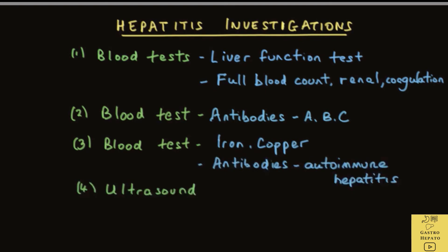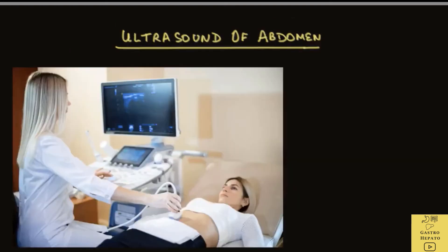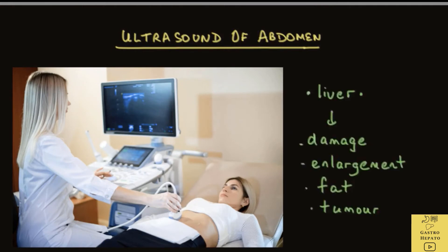Another common investigation is the ultrasound of the abdomen, which uses sound waves to create an image of the organs within the abdomen. Ultrasound can detect liver damage, liver enlargement, excess fat in the liver, or liver tumors. This scan also looks for any abnormality in the gallbladder and the bile duct — the tube that drains bile from the liver to the small intestine.